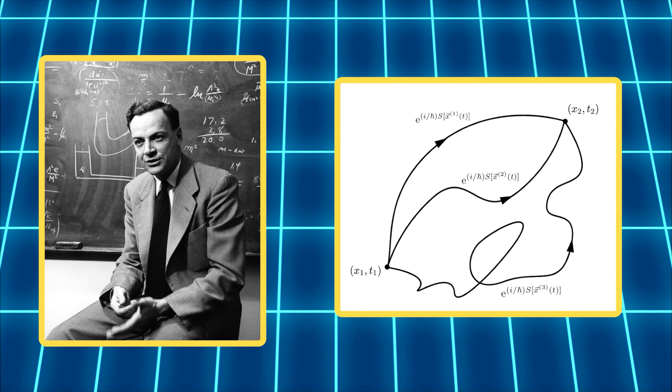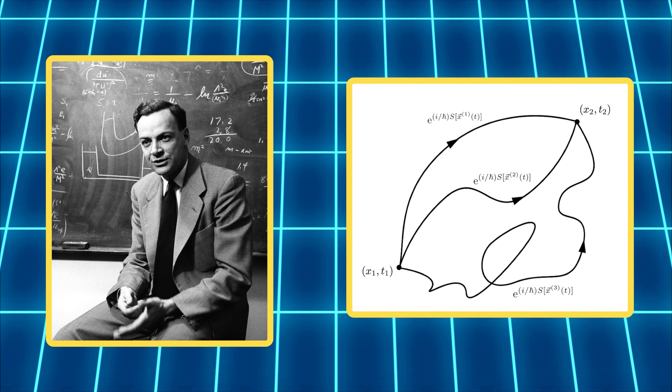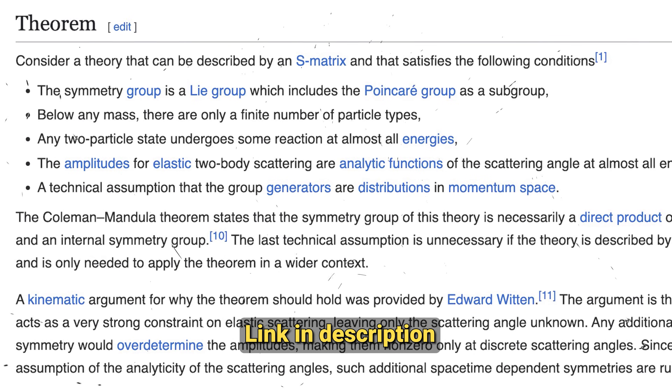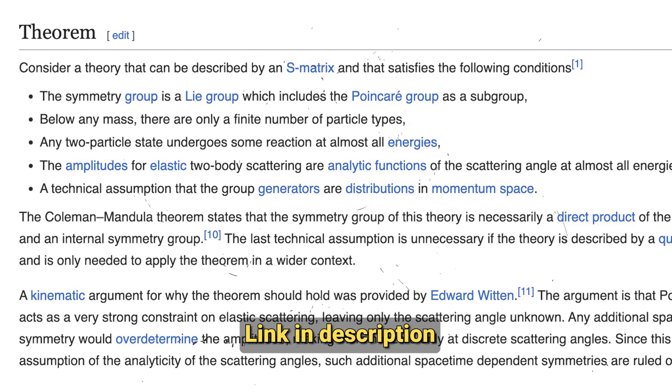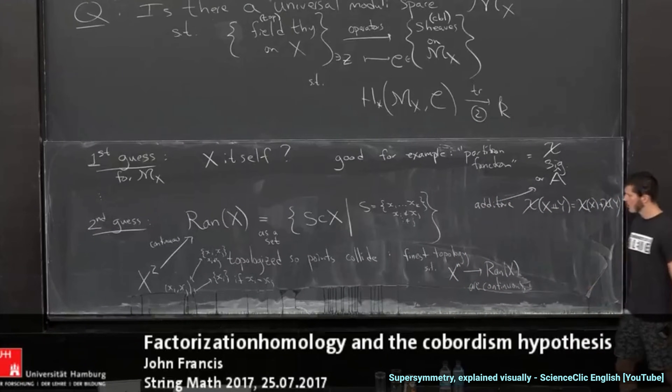So let's get into some examples of what would count. For theoretical physics, maybe a video on the rigorous definition — or difficulties thereof — of the Feynman path integral, maybe constructive QFT, maybe something about the Coleman-Mandula theorem and how supersymmetry is seen as a loophole, BRST cohomology, asymptotic safety, cobordism hypothesis, etc.